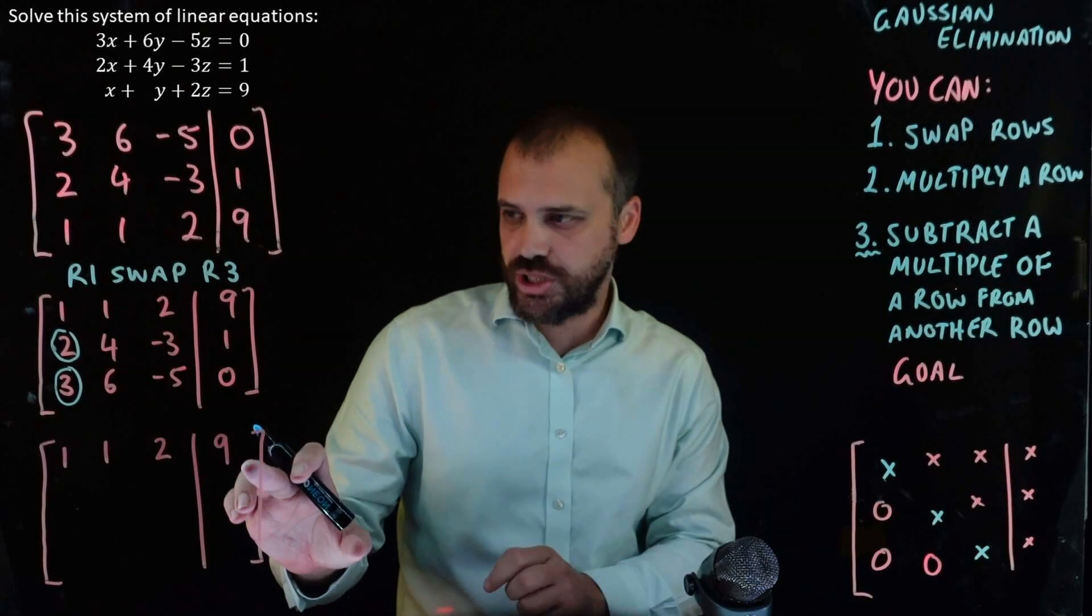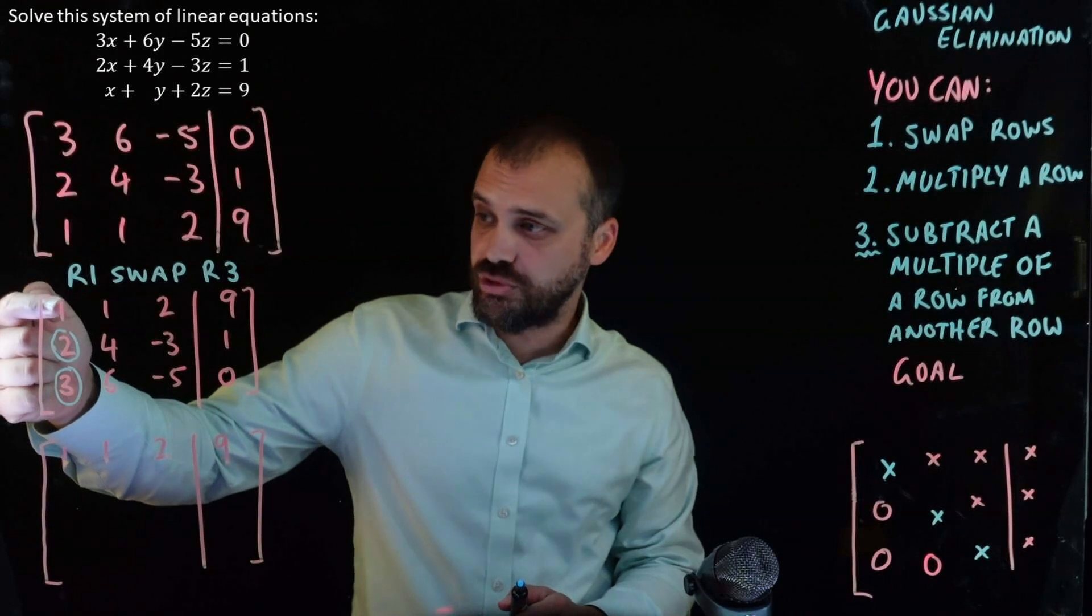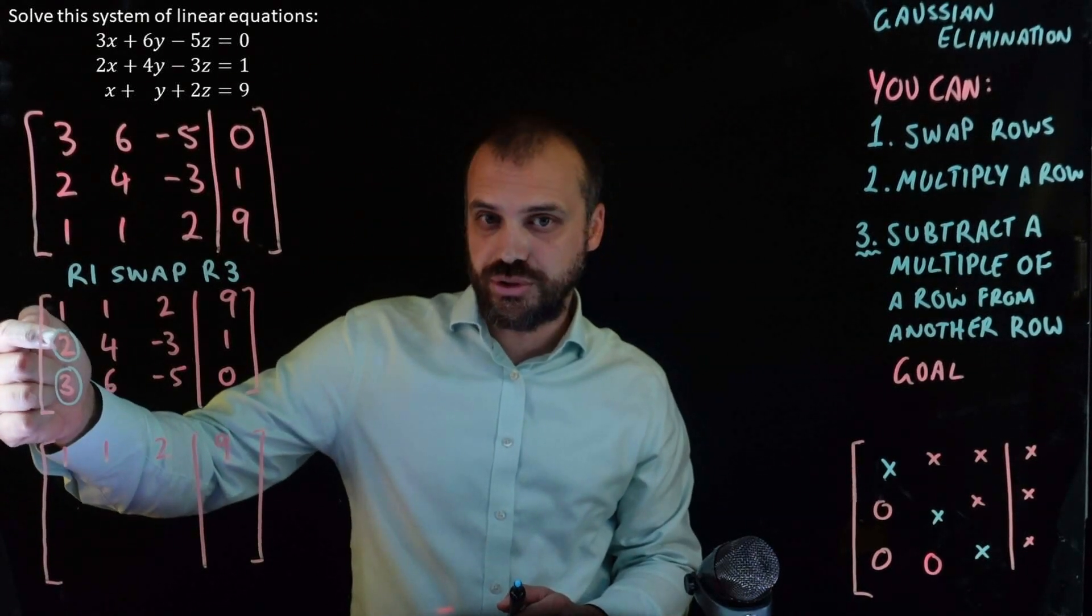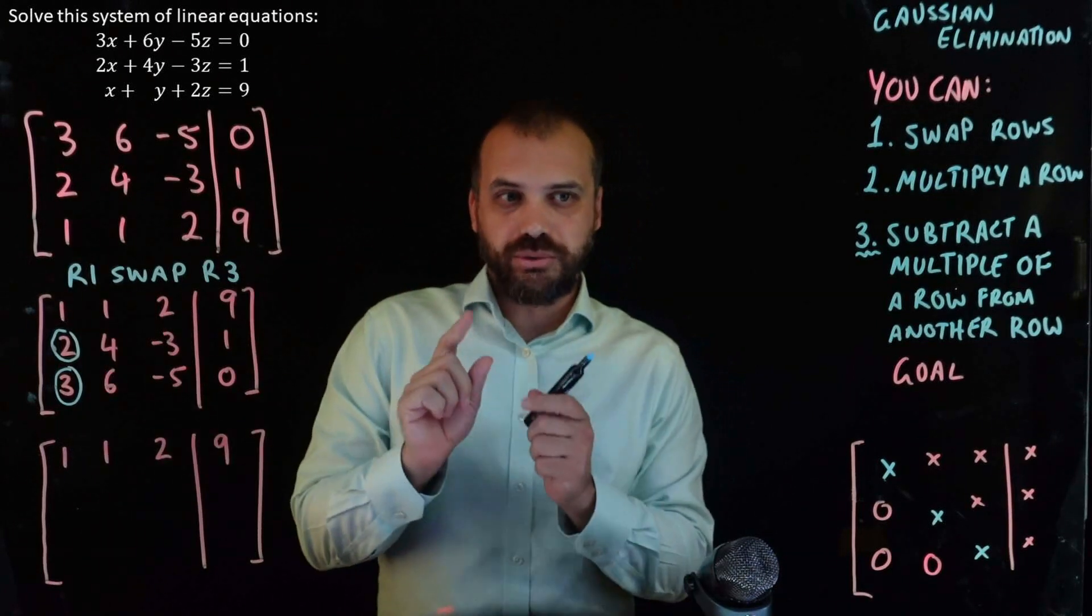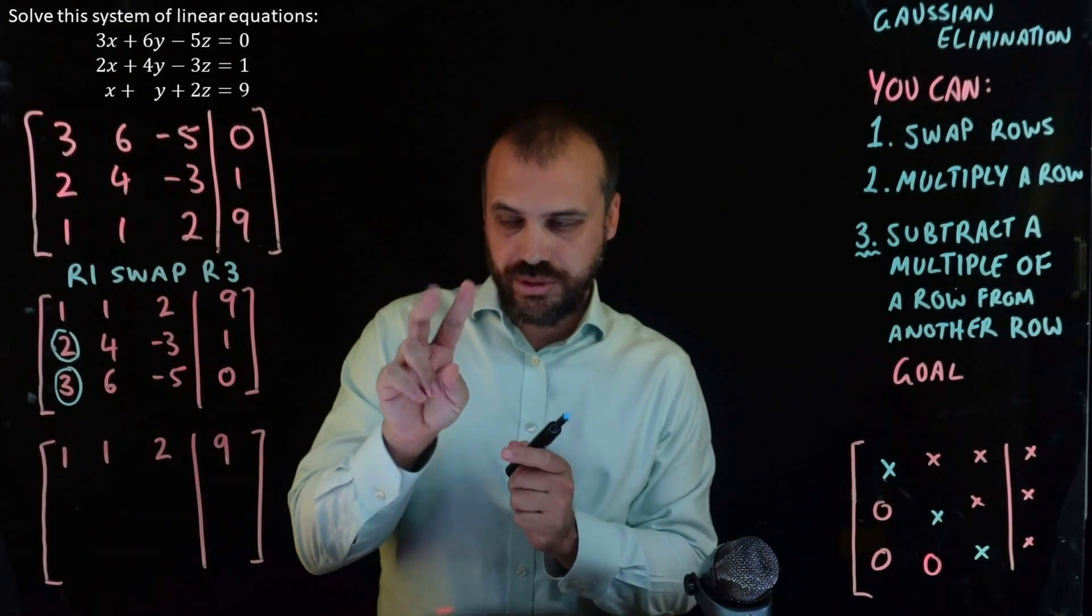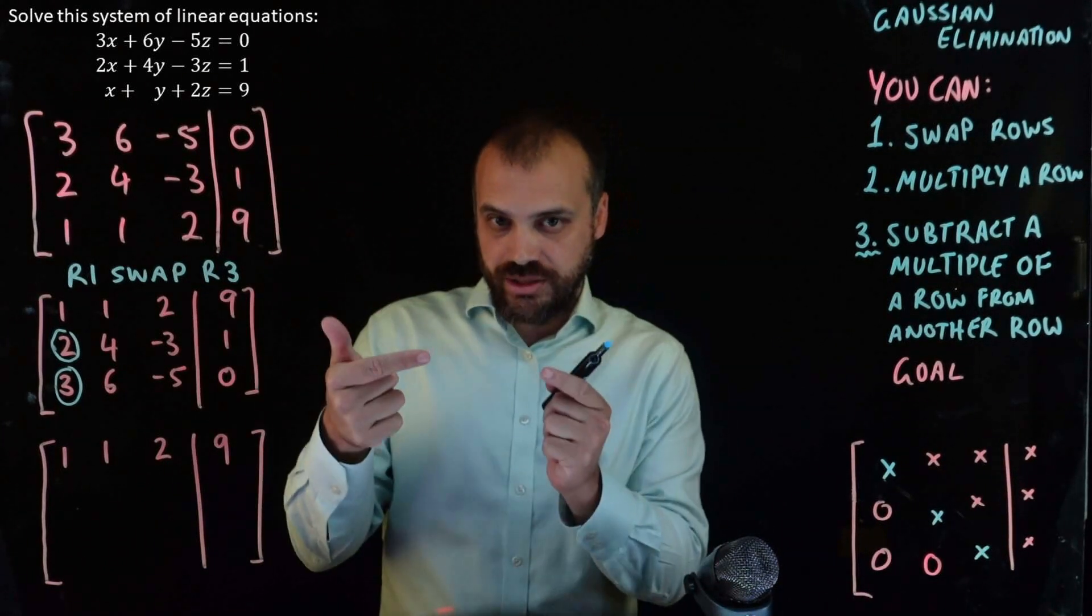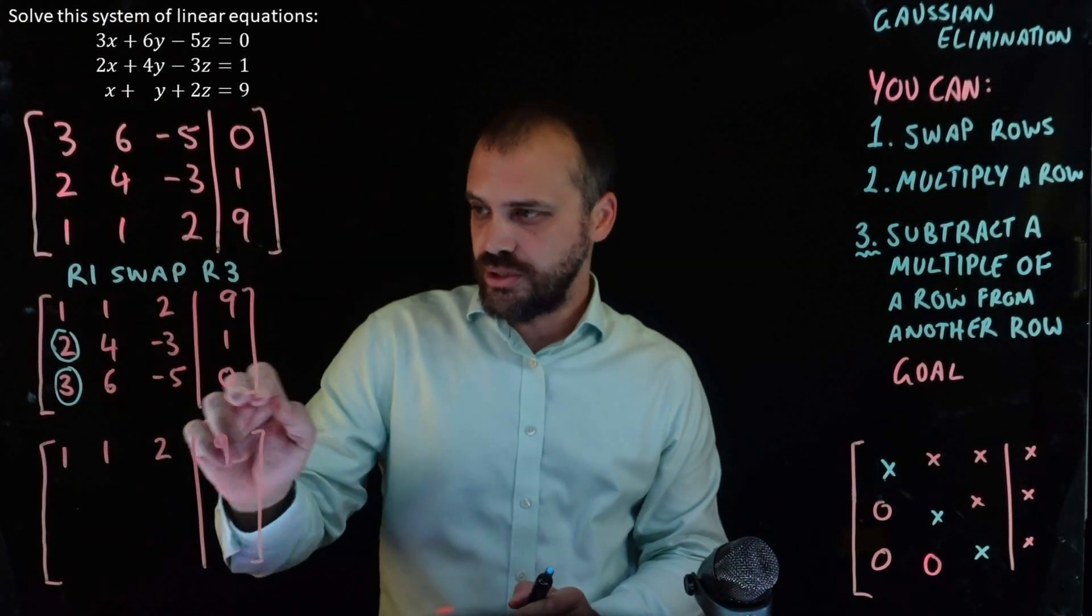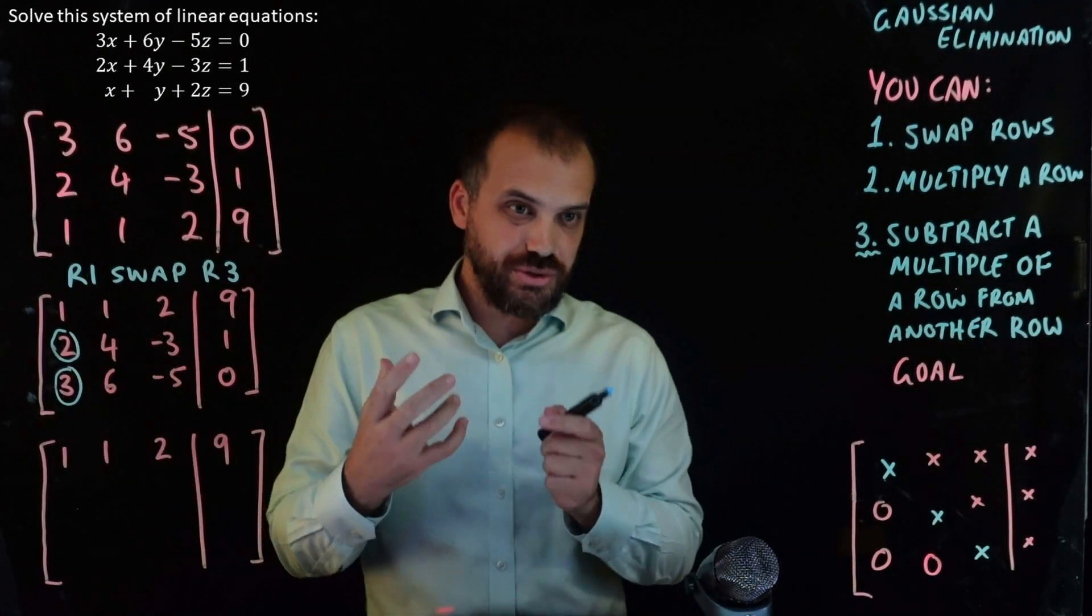Row one doesn't change. Now, what multiple of row one do I need to subtract from row two? If I were to take row one and multiply it by two, that is two, two, four, 18, and subtract that from row two, that would have the effect of destroying this two, making this two zero.